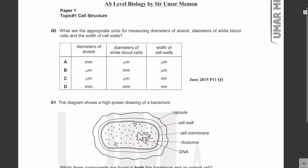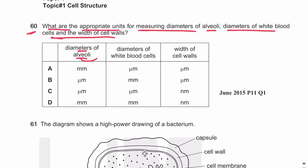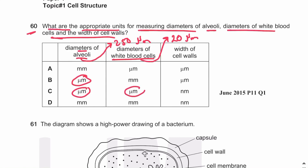MCQ number 60: what are the appropriate units for measuring the diameters of alveoli, diameters of white blood cells, and the width of cell walls? The diameter of an alveolus is 250 micrometers, so we measure alveoli in micrometers. White blood cells are about 20 micrometers, so also measured in micrometers. Cell walls are generally 200 nanometers or greater, so measured in nanometers. The answer is C.